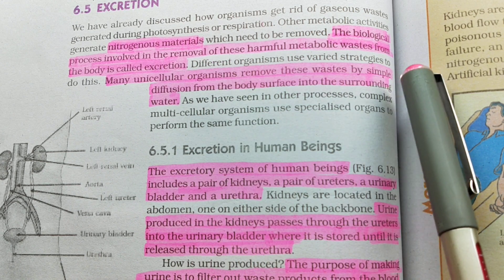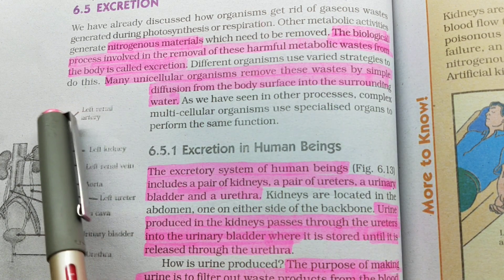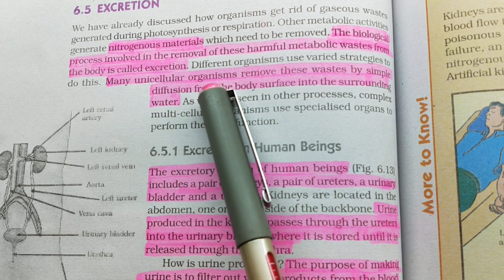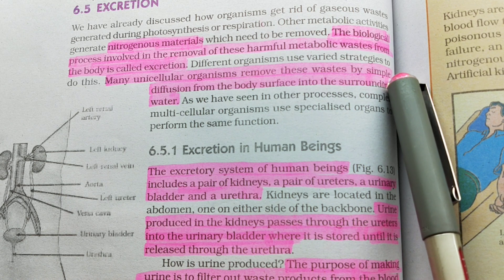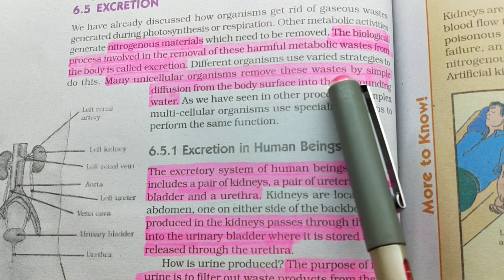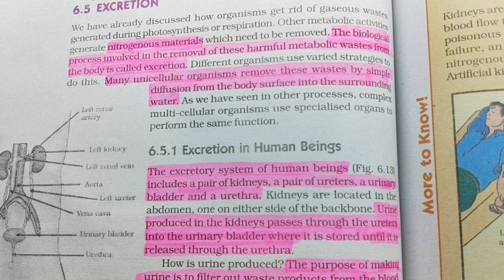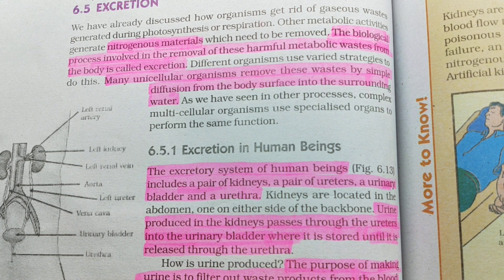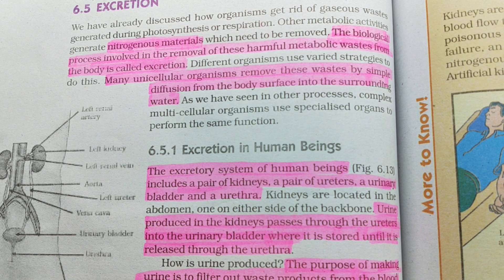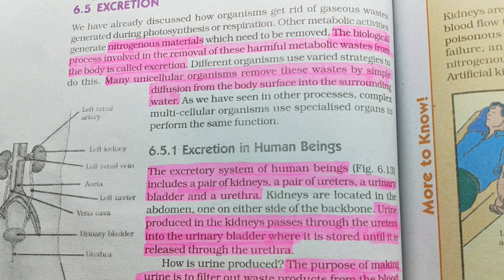Different organisms use varied strategies to do this. Many unicellular organisms remove these wastes by simple diffusion from the body surface into the surrounding water. So, unicellular organisms apna excretion simple diffusion ke through surrounding water mein excrete kar deti hain. Different organisms use different strategies.